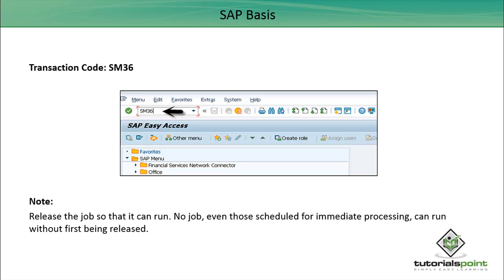The transaction code to execute background jobs in your SAP environment is SM36. Note that you need to release the job so that it can run. When you schedule a job, you have to go to job overview and release the job — even if the job is scheduled for immediate processing. No job can run without first being released.